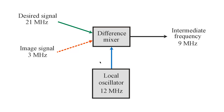What you do basically is have a tunable local oscillator signal that you combine with the desired signal, such that the difference between the tunable local oscillator signal and the desired signal is always a certain constant. In this case, that constant is 9 megahertz.